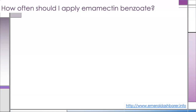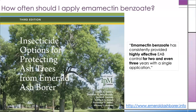One of the most common questions I get is how often should I apply emamectin benzoate. In the manual we put together on pest management options for Emerald Ash Borer, we say quite emphatically that emamectin benzoate has consistently provided highly effective EAB control for two and even three years with a single application. This was written intentionally to give people flexibility to apply the product every two years or every three years, but we were somewhat vague on when to choose two years versus three years because that's a very difficult question to answer.